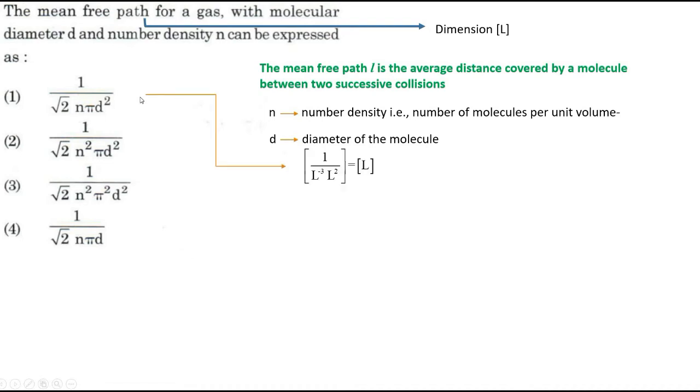So now you can see the first one. One, no dimension. Root 2, no dimension. N, number of molecules per unit volume, therefore dimension L power minus 3. D, being diameter, it is a sort of length. So L square, because D square.